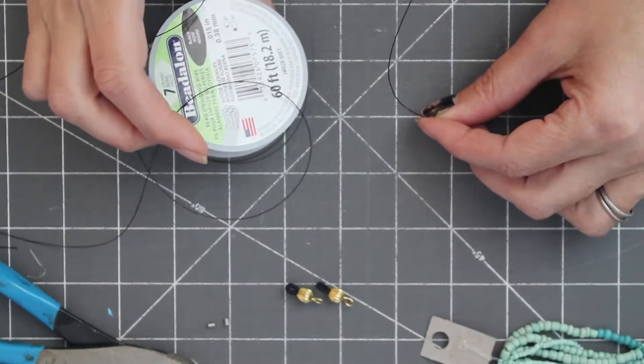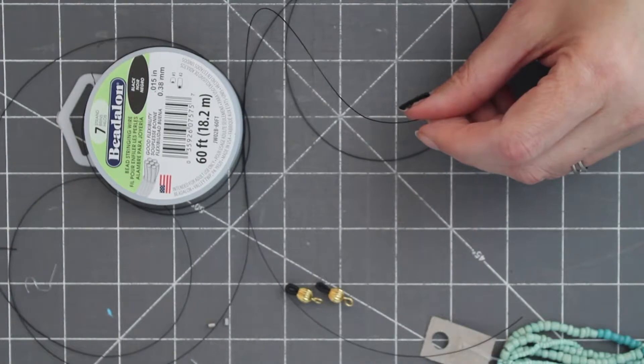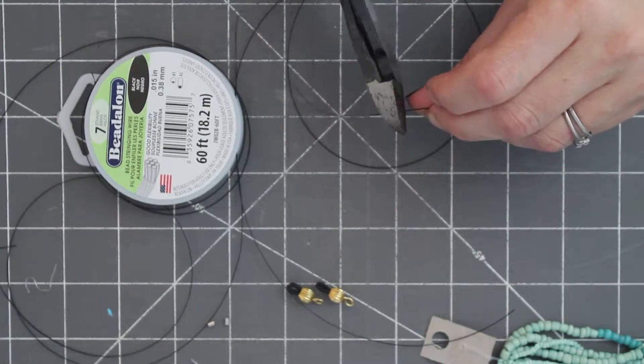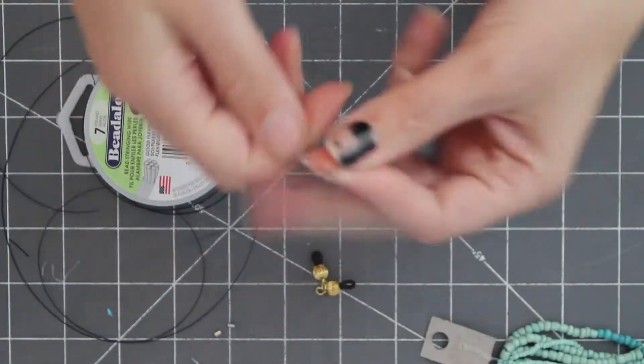Step 1, take the bead wire and measure out 30 inches, which I did. Cut the bead wire for your 30 inches.